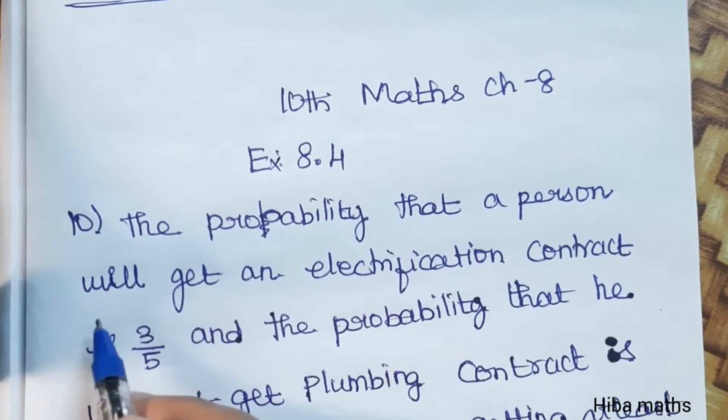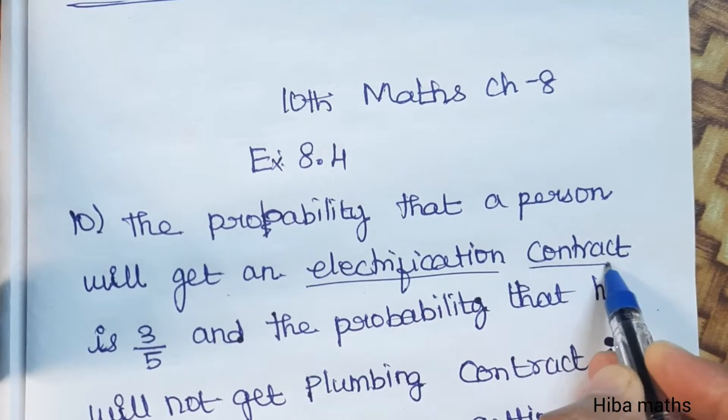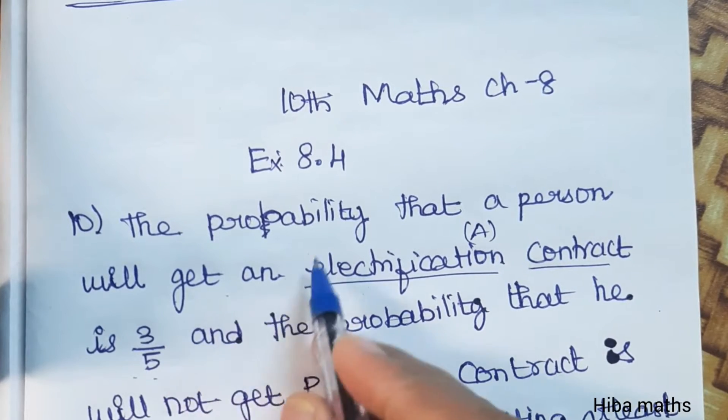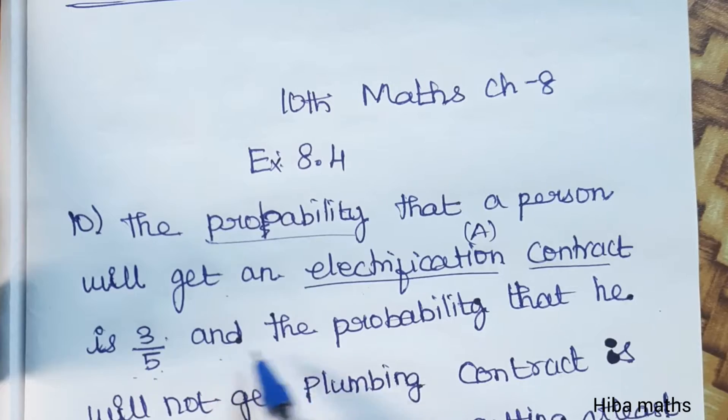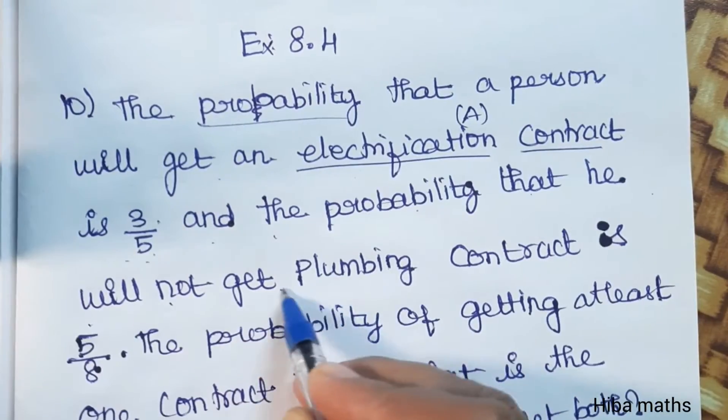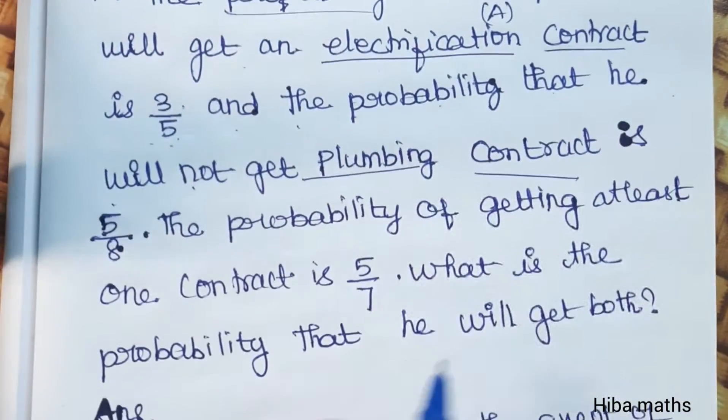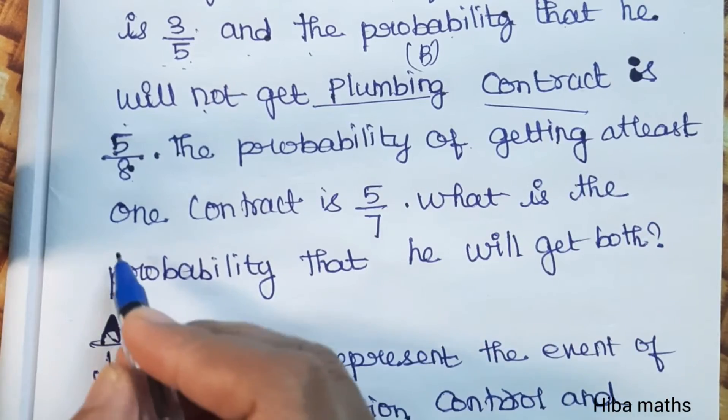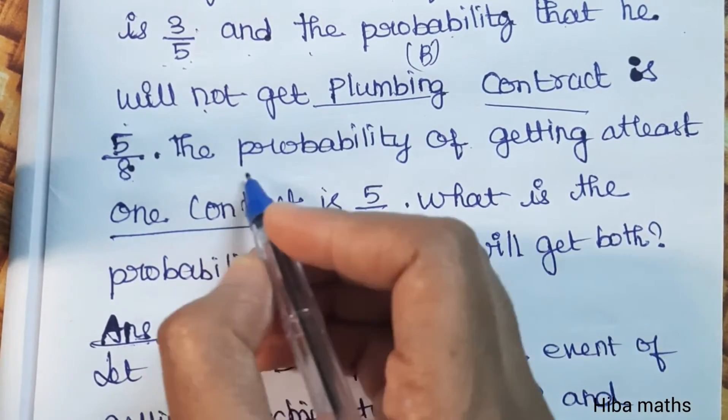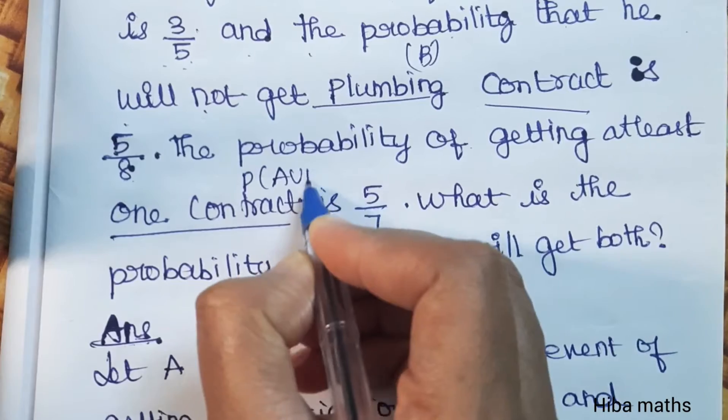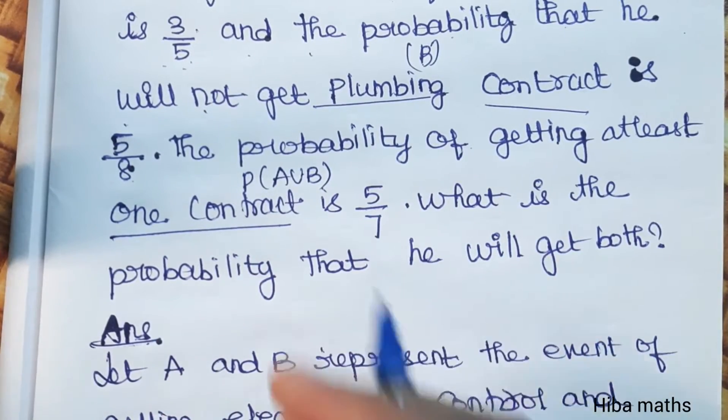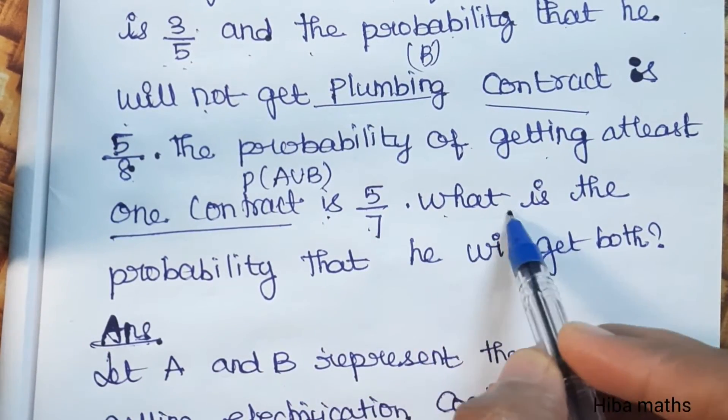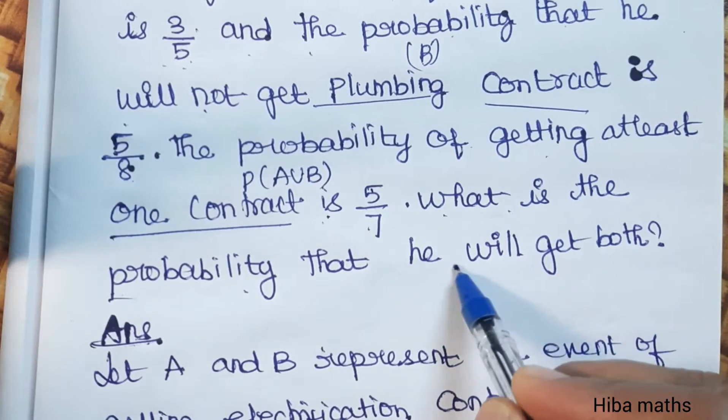The probability that a person will get an electrification contract is 3 by 5. And the probability that he will not get plumbing contract is 5 by 8. The probability of getting at least one contract is - what is the probability that he will get both?